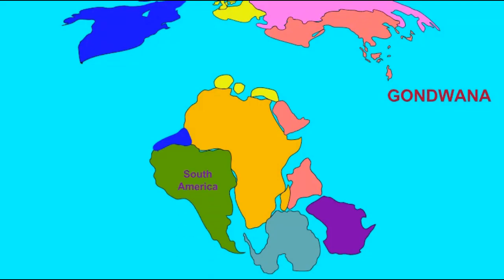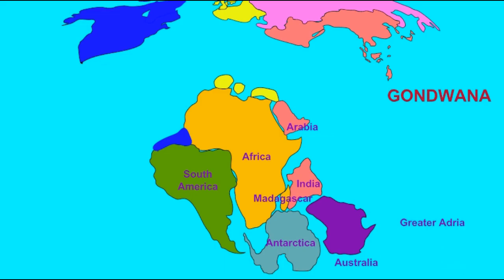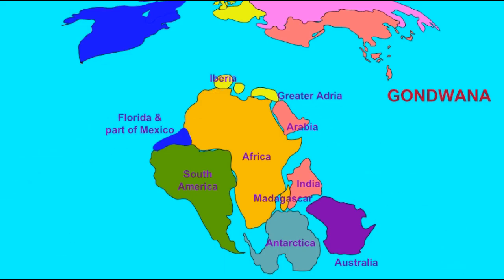During the late Paleozoic era, an ice age occurred, not one that primarily affected northern continents, but rather the southern supercontinent of Gondwana, as ice sheets spread over southern South America, Africa, India, Australia, and Antarctica.